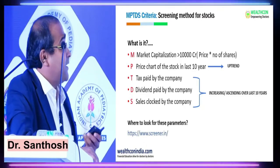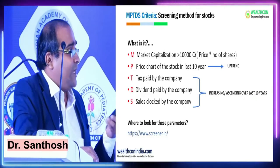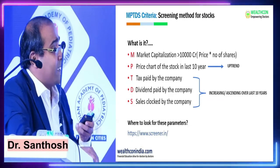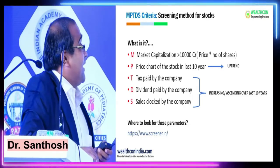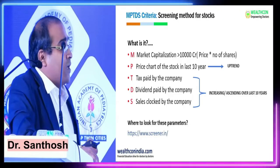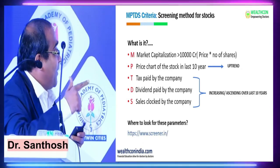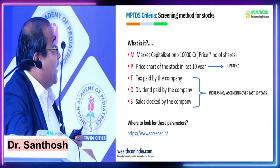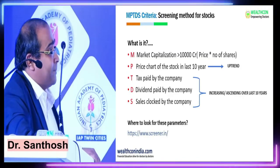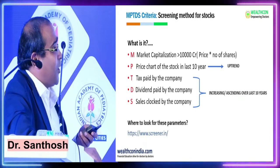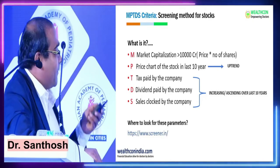If the tax is increasing, that means it is a fundamentally good company. Dividend is also given quarterly or annually and should be increasing, because dividends come from profit only. The last criterion in MPTDS is S for Sales. All parameters should be uptrending — price, tax, dividend, and sales. If sales are increasing, that means their products are in demand. Companies like HUL, Nestle, Hero MotoCorp — more bikes sold means more demand, more profit, and the company will do better.